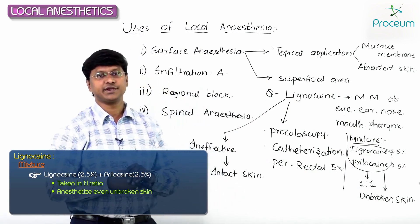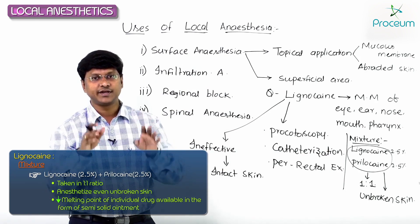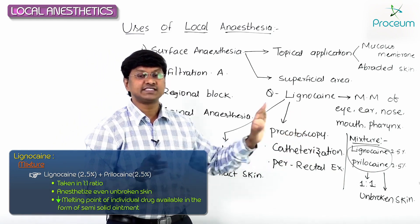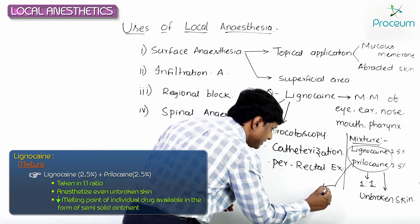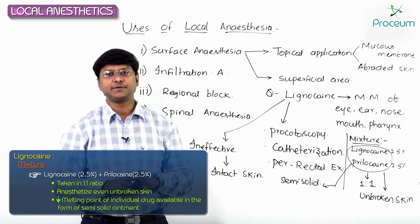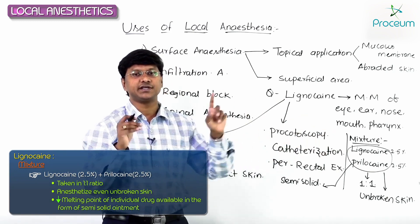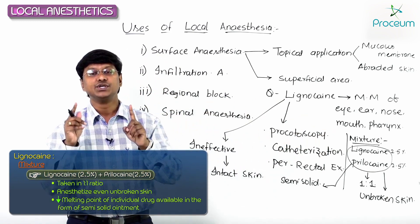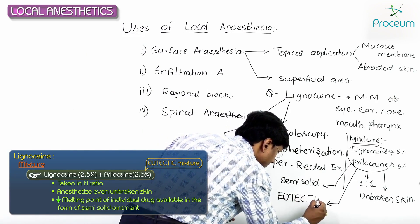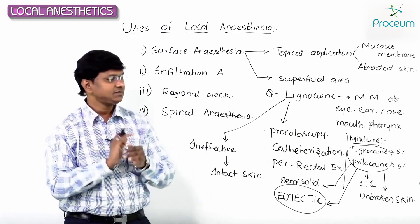Another important point is that the combination of lignocaine and prilocaine lowers the melting point of the individual drugs, and that is why this particular mixture is available in the form of a semi-solid ointment. The name of this mixture - lignocaine 2.5% and prilocaine 2.5% in a ratio of one to one - is called the eutectic mixture.